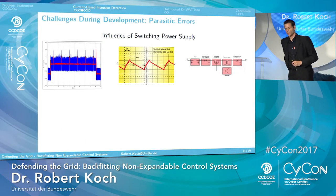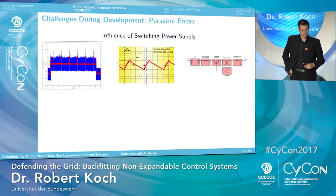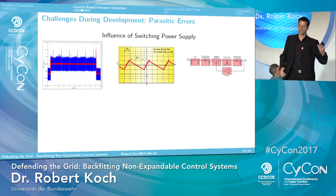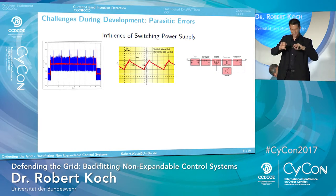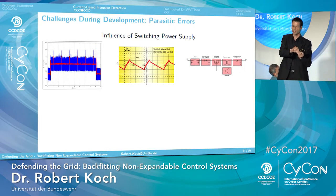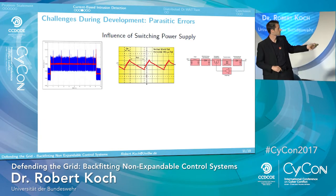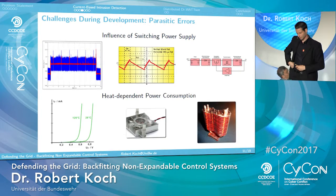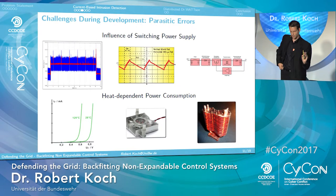During development we encountered some interesting challenges. Looking at the power consumption of the computer itself, we saw influence from the switching power supply: it produces 5V direct current, but if you look closely it's not really a continuous wave — it's a kind of sawtooth, switching on to produce energy, then switching off, very fast. Another interesting aspect is the heat dependency of power consumption — as the processor heats up during operation, power consumption changes.